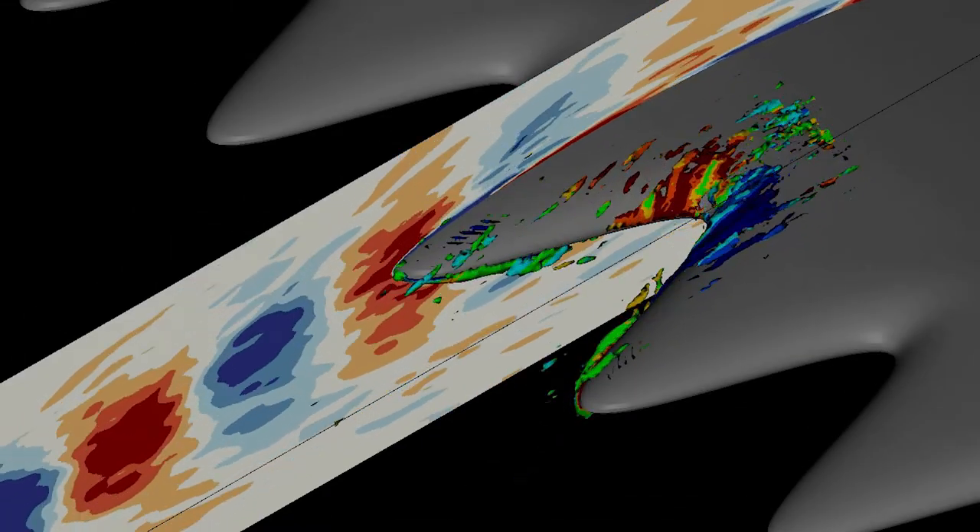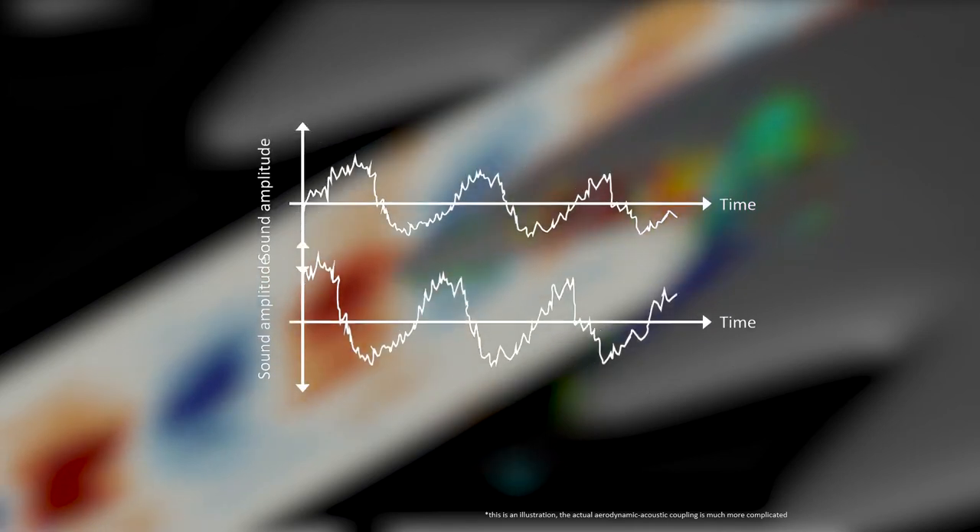It is later found that the serrations have two separate regions where the noise sources are, one at the tip and the other at the root. But because they are separated, they emit noise at a slightly different phase, which may partially cancel each other out. In fact, this process is quite useful for eliminating tonal noise, which the porous material simply does not have.